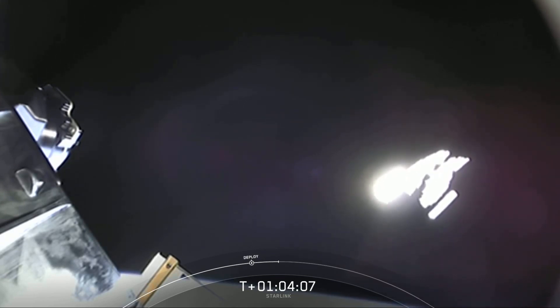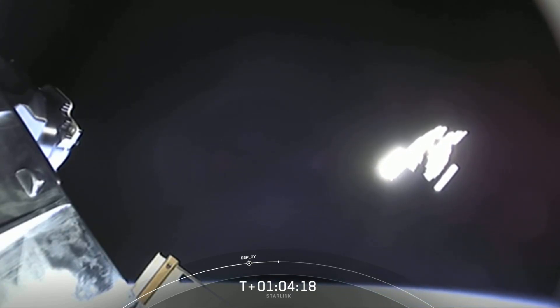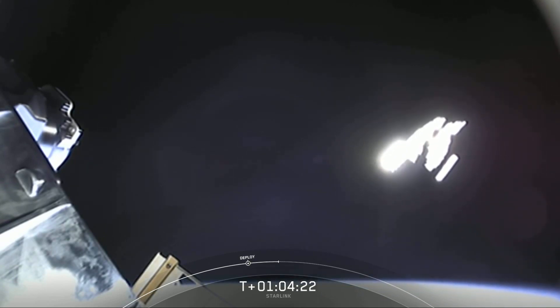You can see those spacecraft starting to separate as they naturally glide away from each other. The sun is glinting pretty strongly off the panels and the bodies of those spacecraft, so it's tough to see them individually, but you can kind of see one breaking away from the pack right now. Those spacecraft will slowly disperse over time.